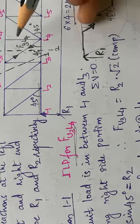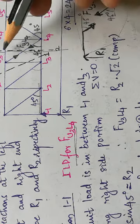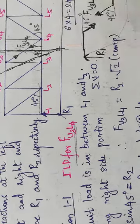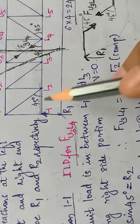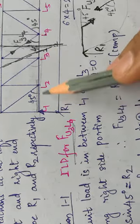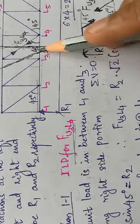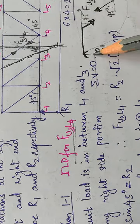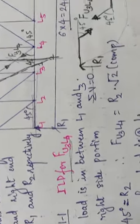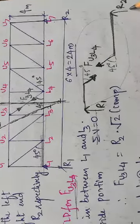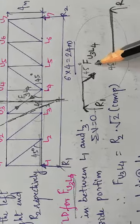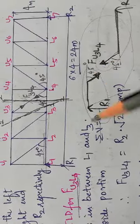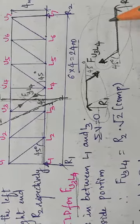I have made a cut and divided the structure into two parts — the left part and the right part. I am first considering the load between L1 and L3. So I will take the right-hand side equilibrium. The free body diagram shows R2 on the right, with force u3L3 on the right-hand side. When the load is on the left side, you take the right-hand side.